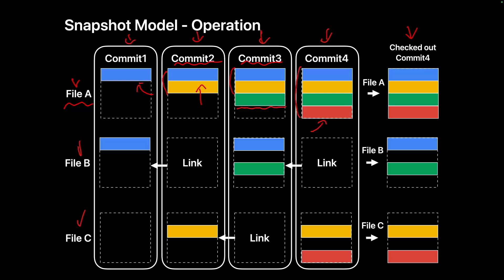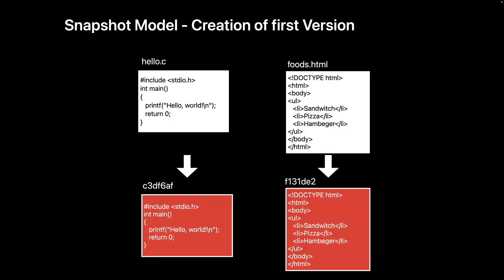When the first version is created using the snapshot model, two objects are generated. One object stores the content of hello.c, and the other stores the content of foos.html. Each object is identified by a hash — the first labeled c3df6af, the second f131de2. Here the hash values are simplified to 7 characters, but hashes used in Git are 40-character hexadecimal strings. This is the first time we encounter the term hash, and since it is a crucial concept in Git, let's explore it in detail.